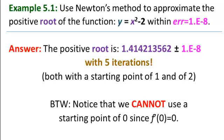By the way, you should notice that we cannot use a starting point of 0 since the derivative of the function at 0 is 0, and that will kill that denominator. With that, we have finished example 1 of Newton-Raphson's method.